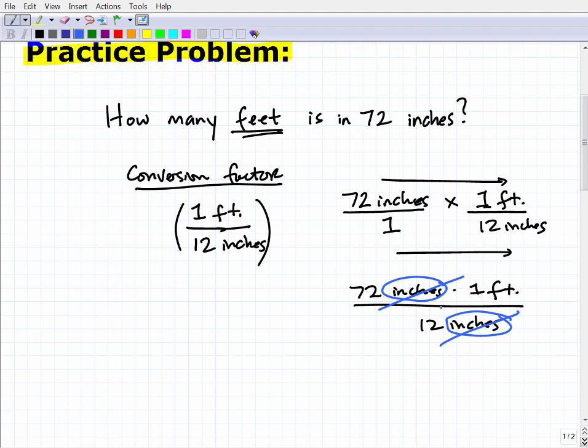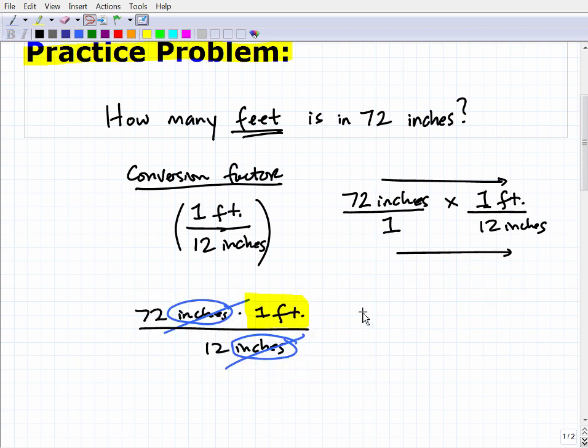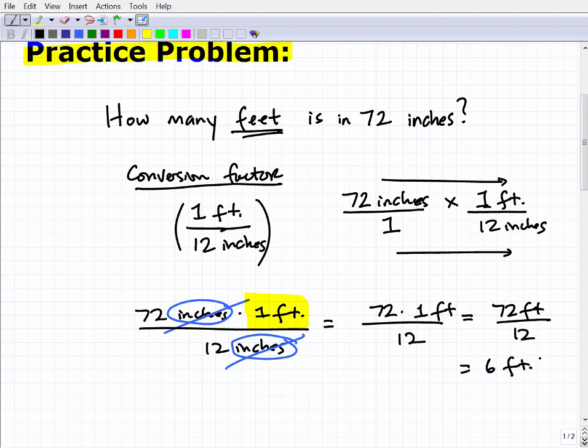When I eliminate the inches, I'm left with 72 times 1 foot over 12. See, the inches are eliminated and this is what I'm left with. I have 72 times 1 foot, which is 72 feet, divided by 12. 72 feet divided by 12 is 6 feet. But the key is that my unit of measure is a foot because that's what I wanted to know. It's feet because I wanted to go from inches to feet. I needed to eliminate inches.